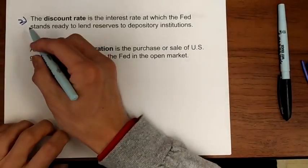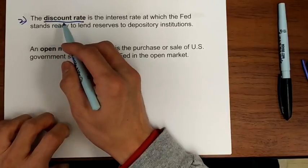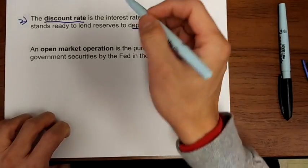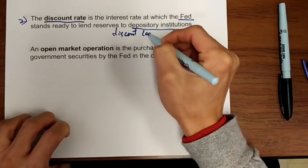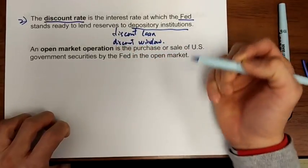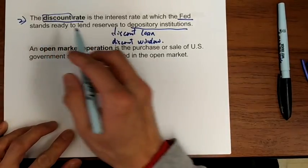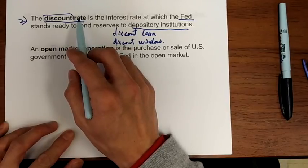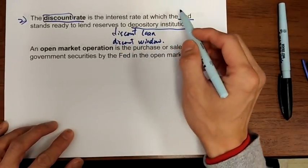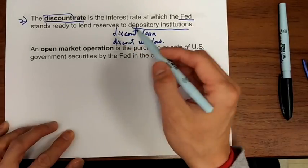The second traditional monetary policy tool used by the Fed is the discount rate. The discount rate is the interest rate that the Fed charges commercial banks for borrowing discount loans at the Fed's discount window. This is a monetary policy tool because the Fed sets the discount rate. If the discount rate is higher, that discourages commercial banks from borrowing reserves from the Fed. If the discount rate is lower, that encourages commercial banks to borrow discount loans from the Fed.